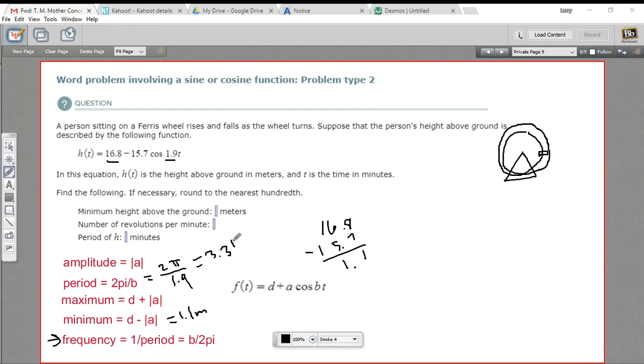So our period here is 3.31. And this is how long the Ferris wheel takes to do a complete revolution. So when we're talking about our period, we're talking about minutes. So 3.31 minutes.